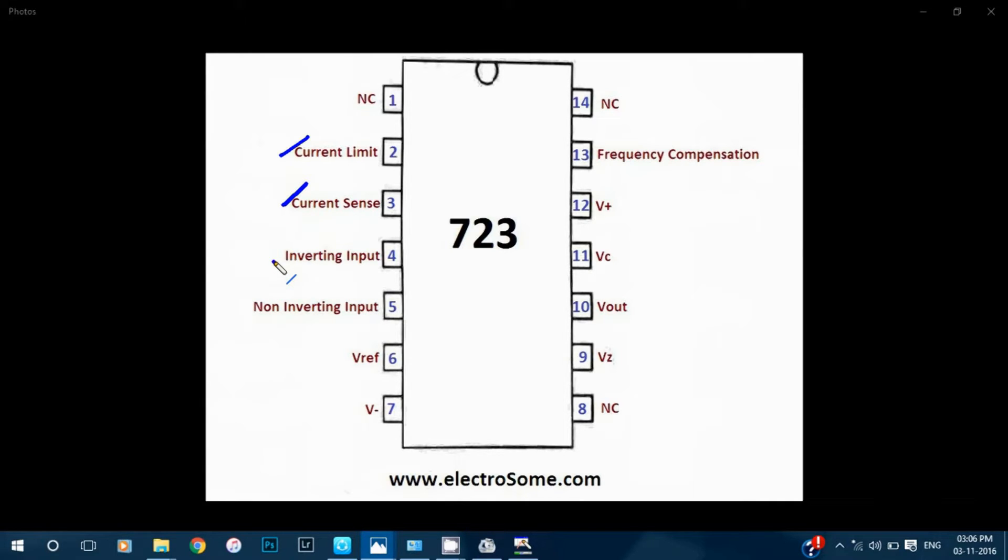The fourth pin is the inverting input. This is the inverting input of the error amplifier whose output is connected to the series pass transistor. This makes the output voltage constant.